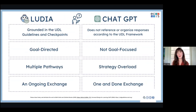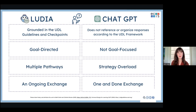People ask all the time, what's the difference between engaging with Ludia and engaging with ChatGPT — including the new ChatGPT 4.0, which is available to all of us for free. We have tried and tested, and here's what we can tell you: Ludia, in the way in which we've engineered it, will always ground the responses in the UDL guidelines and checkpoints — going back to that idea of a slow drip professional learning experience. You will always have a goal-directed response, and you're also going to be given, normally, four different hot-linked pathways. Through the lens of UDL, we always want to focus on fixed goals and then allow for flexible means. You're going to have an ongoing exchange — Ludia will invite you to come back, try something out, and then come back and share how it went.